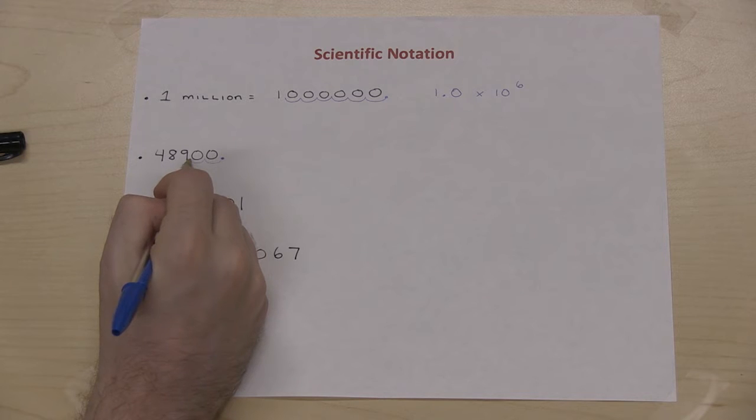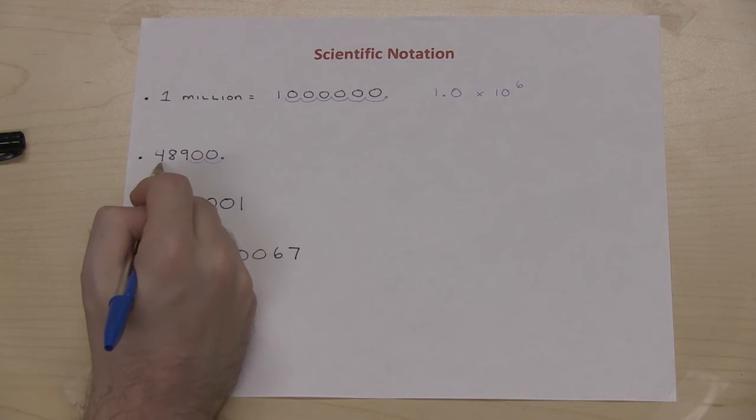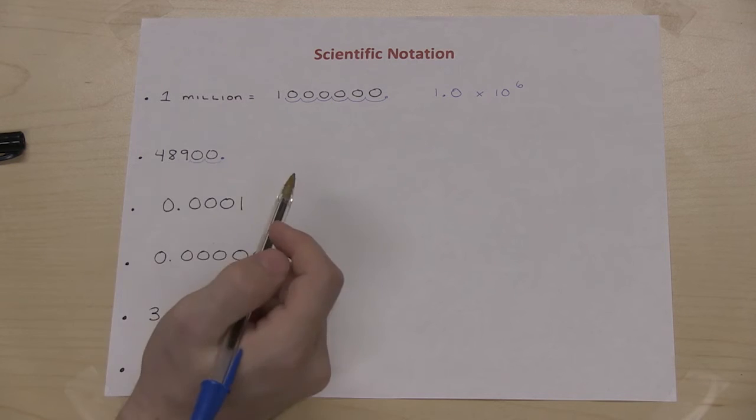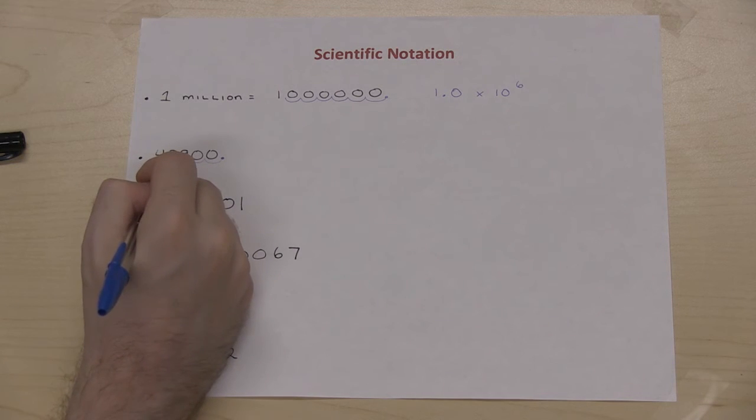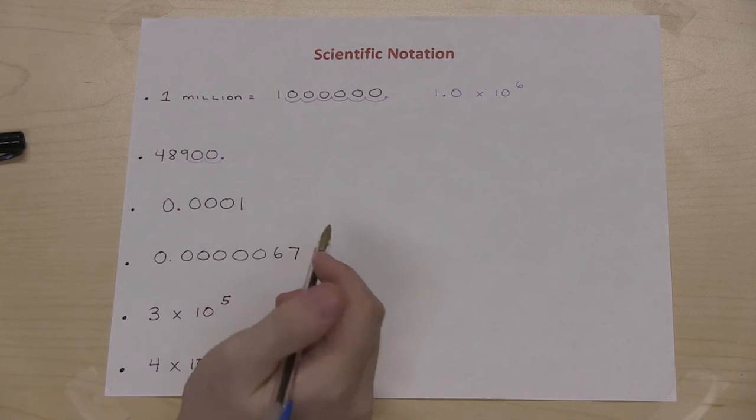1, 2. If I put the decimal there, that gives me 489, so that doesn't work. If I move it another place, that gives me 48.9. That still doesn't work. Move it again, and now I get to 4.89. That is between 1 and 9.